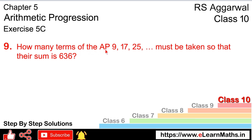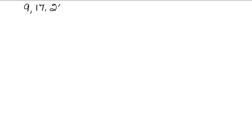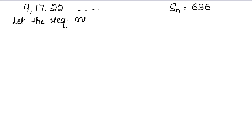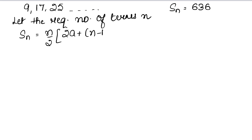Question number 9: how many terms of the AP 9, 17, 25... must be taken so that their sum is 636? इसकी कितनी terms ली जाए और उनको add किया जाए जिनका sum 636 आए। Let the required number of terms be N। SN = N by 2 into 2A plus N minus 1 into D।